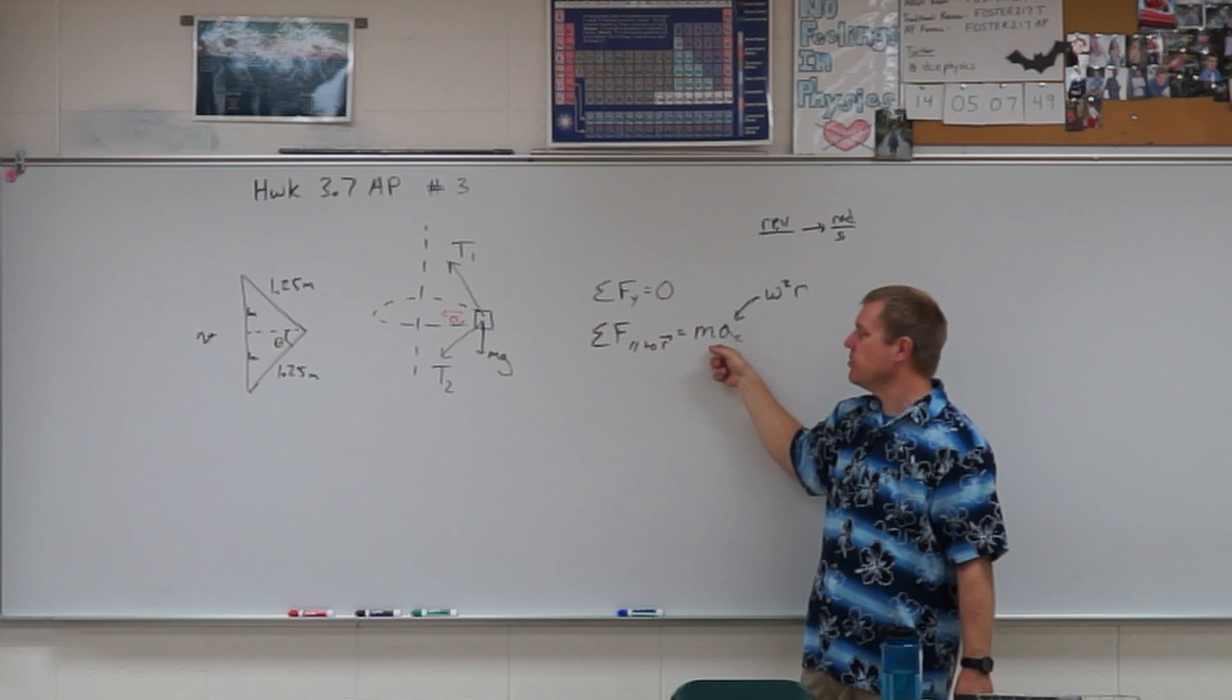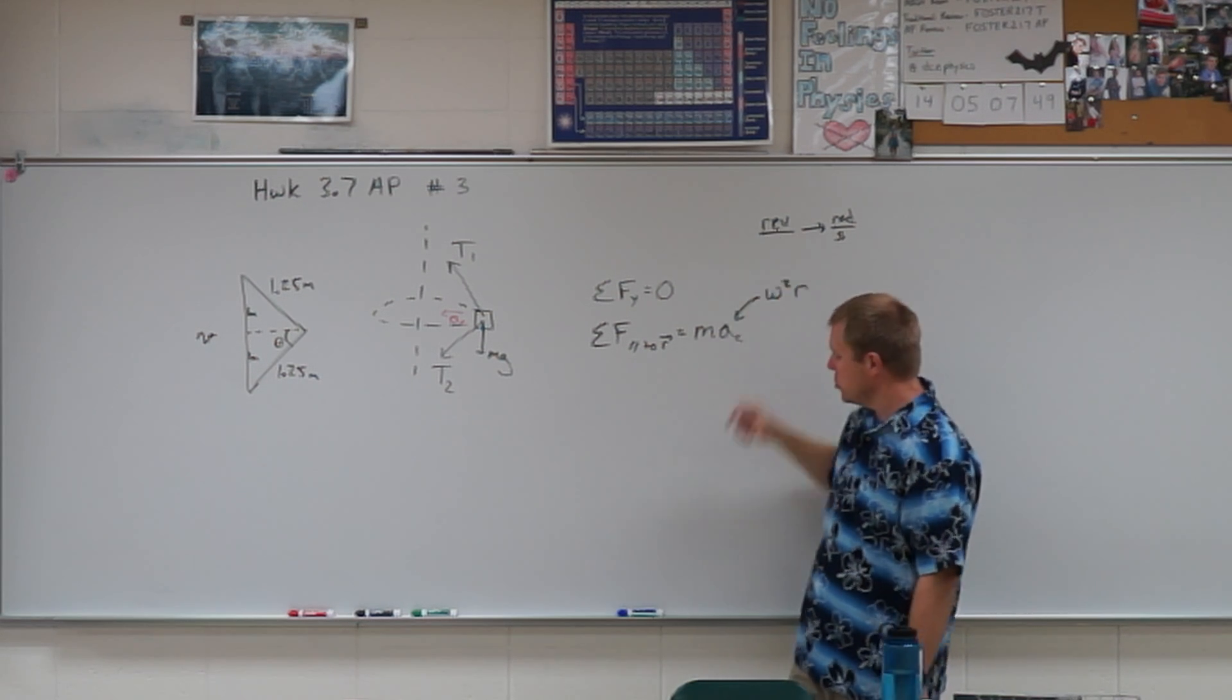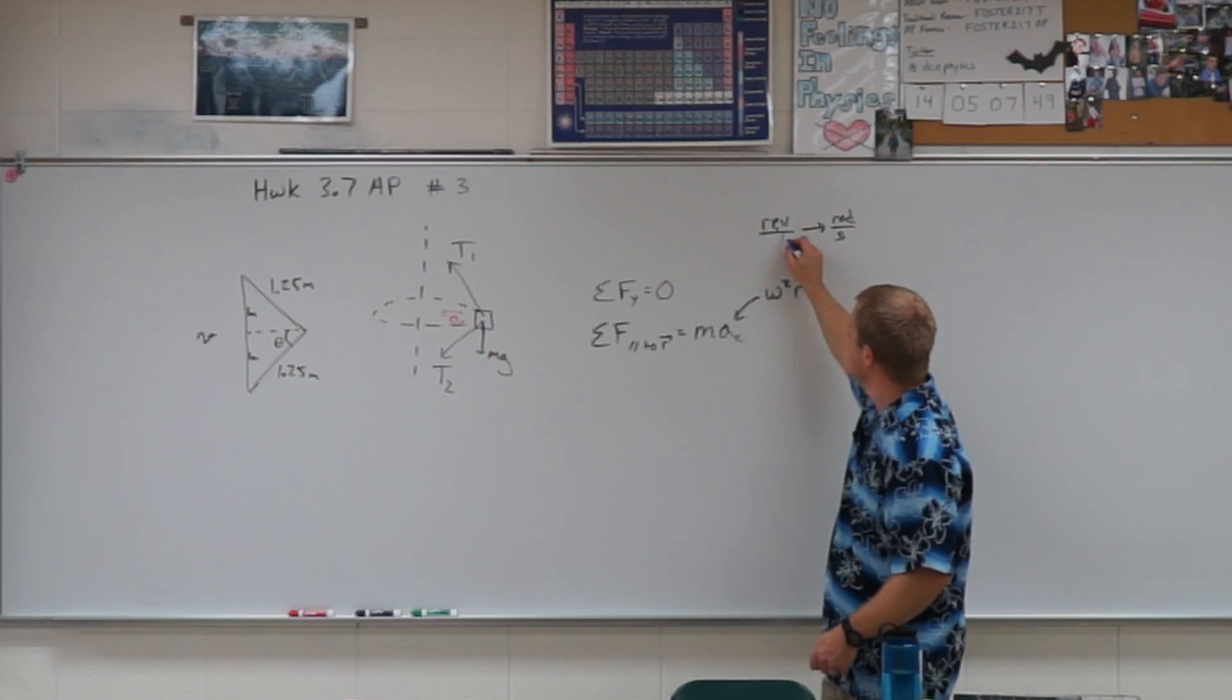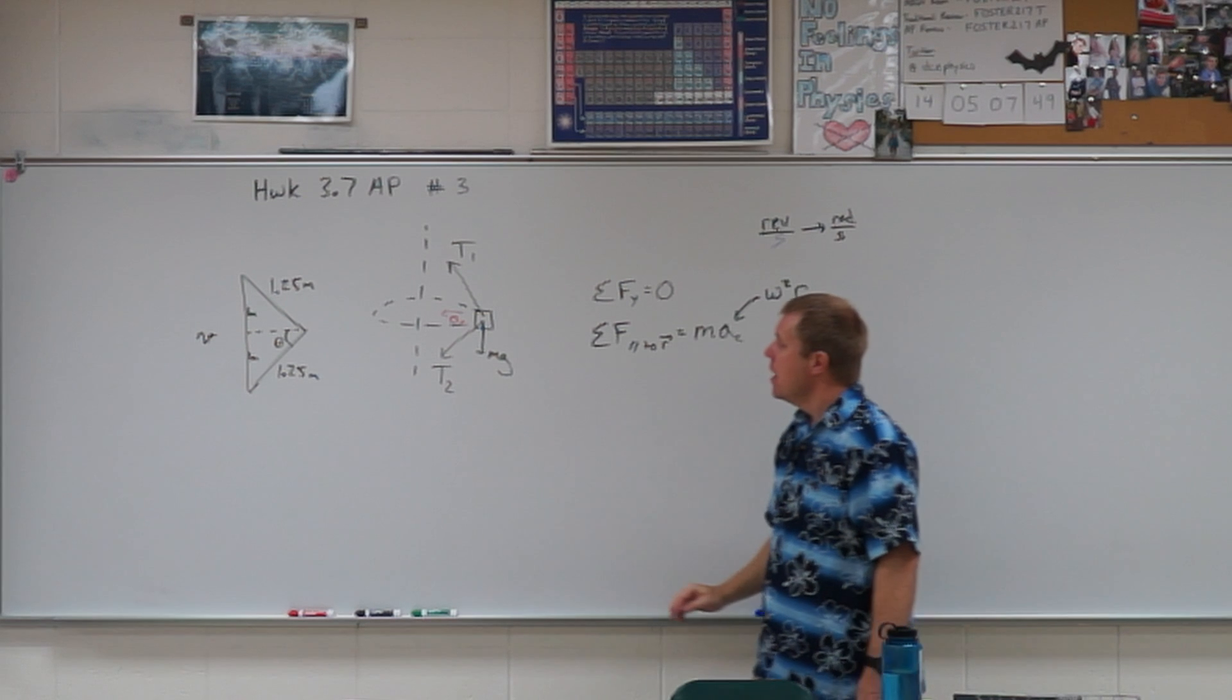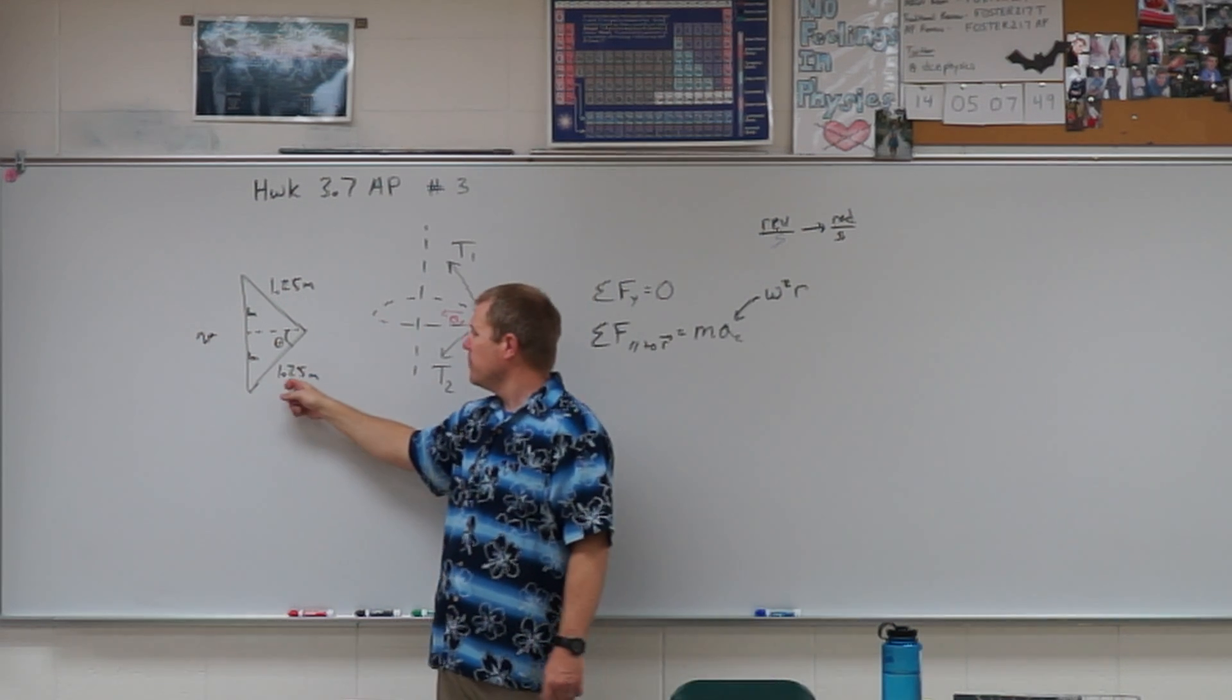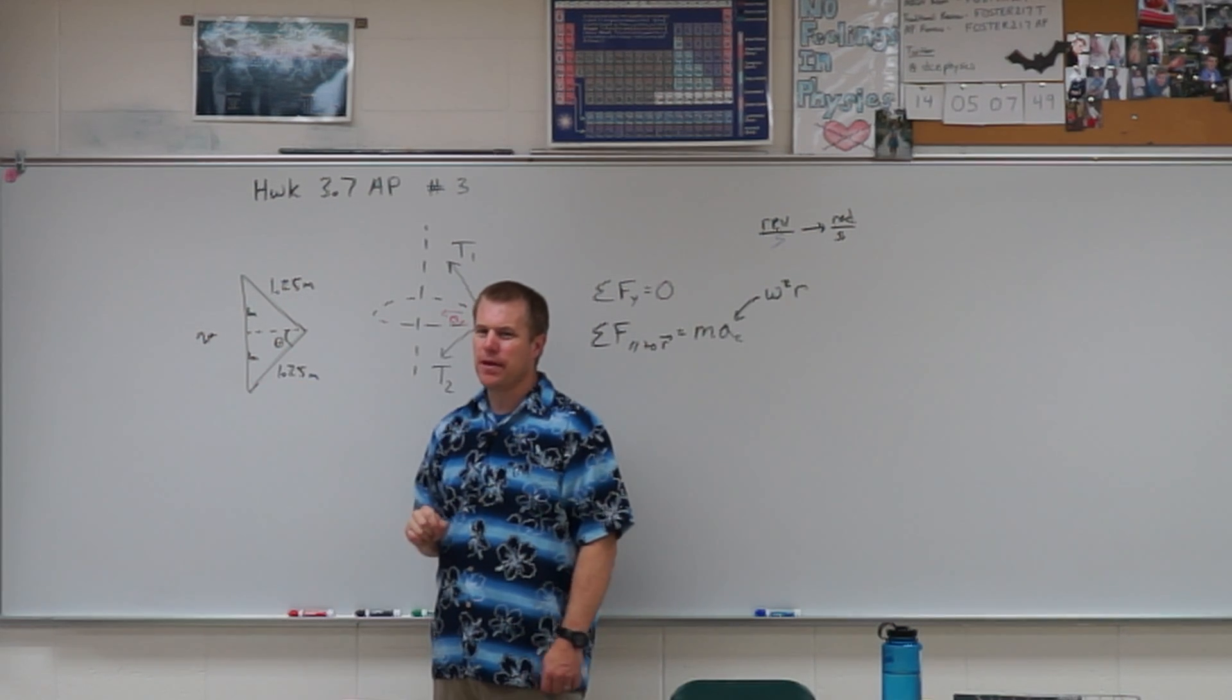We're going to be making our substitution for MAC, where AC is going to be omega squared times R. Make sure you change revolutions per second here to radians per second. And then there's one other thing to remind you of: we are going to need to know these angles, so you will have to do a little trig setup in there as well.